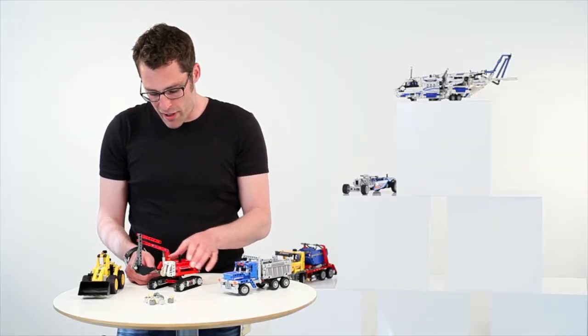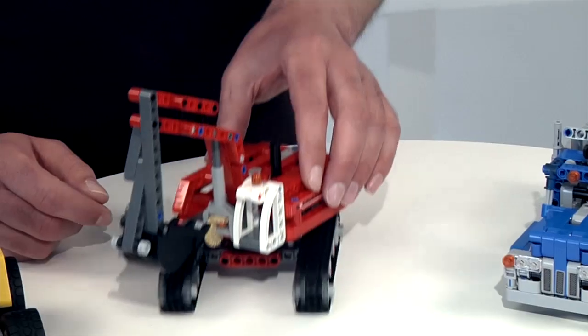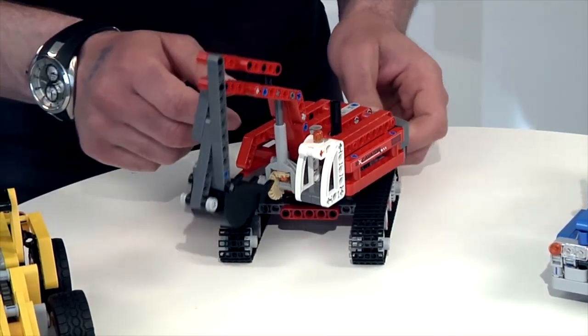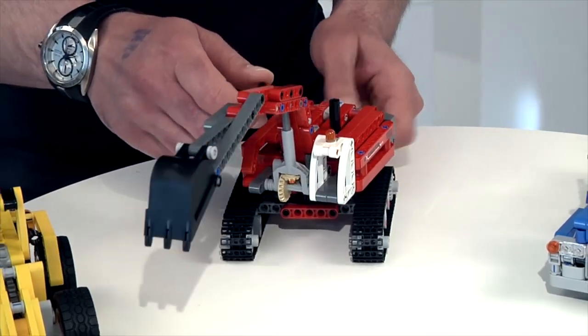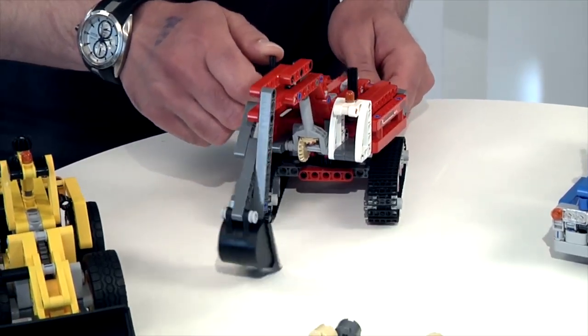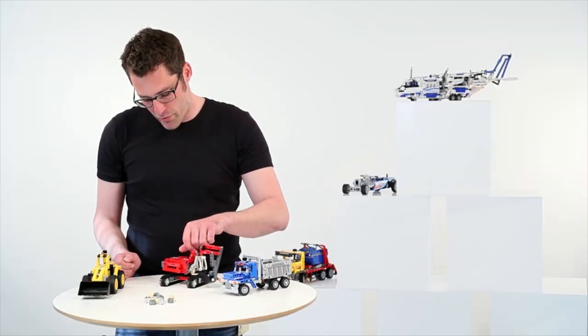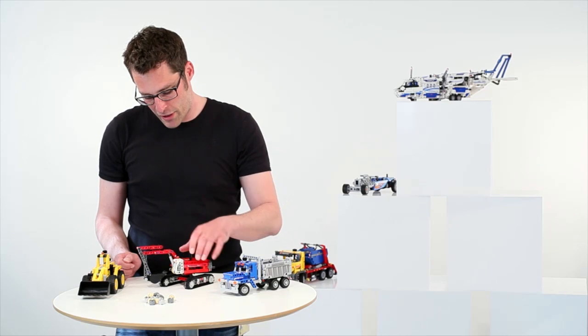The other model is the excavator. Where you have tracks, also very smooth running. You can use the shovel in the front. So you can actually dig with it. Like this. And you can also spin the superstructure of the model. So a lot of functions in a small model.